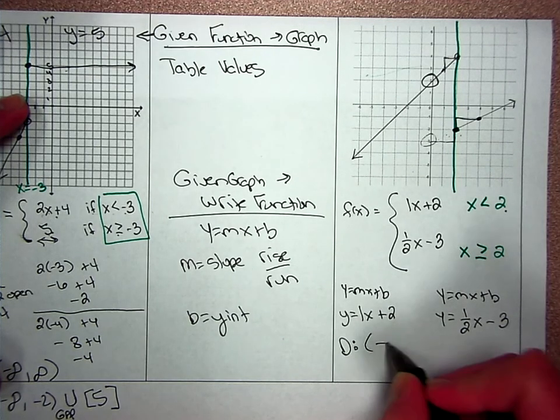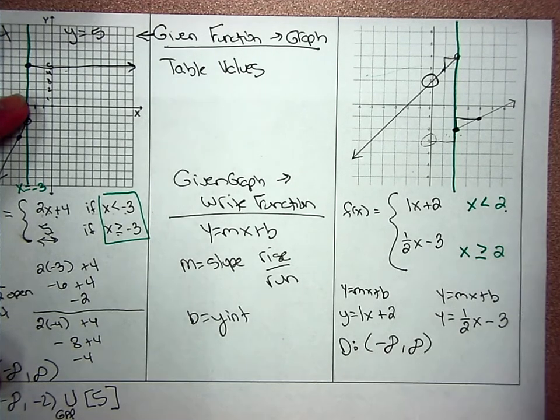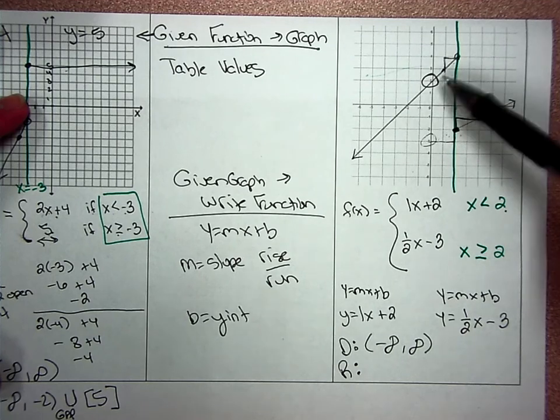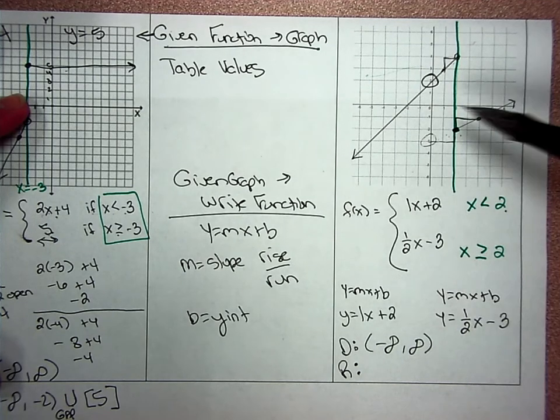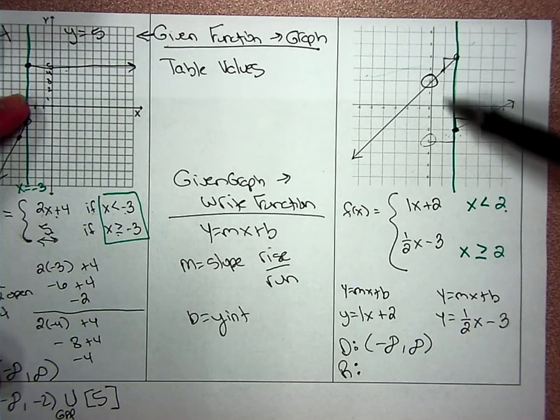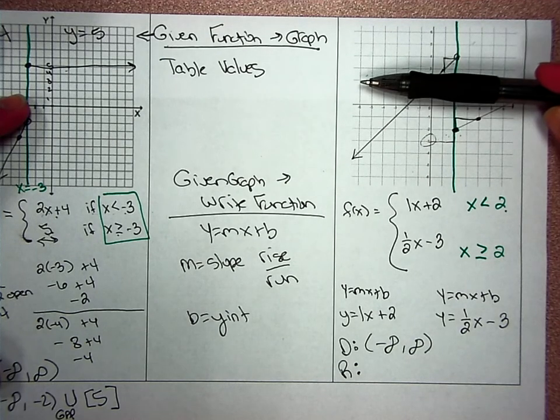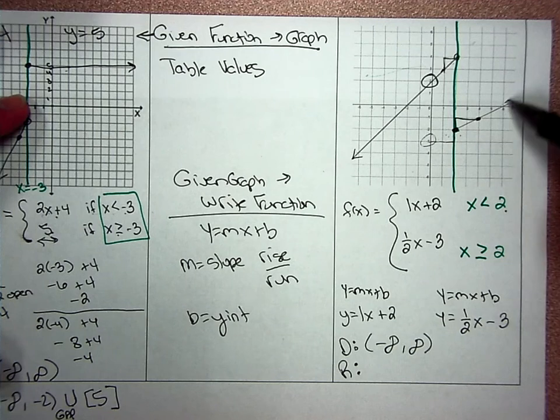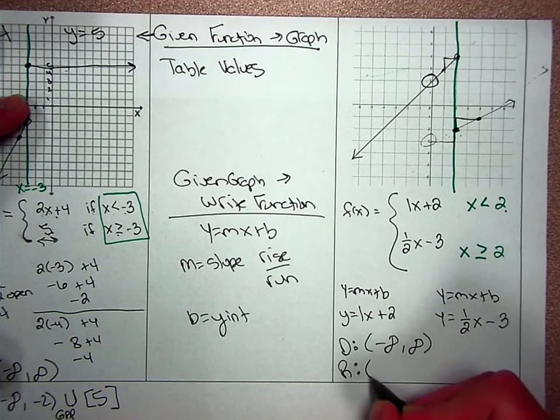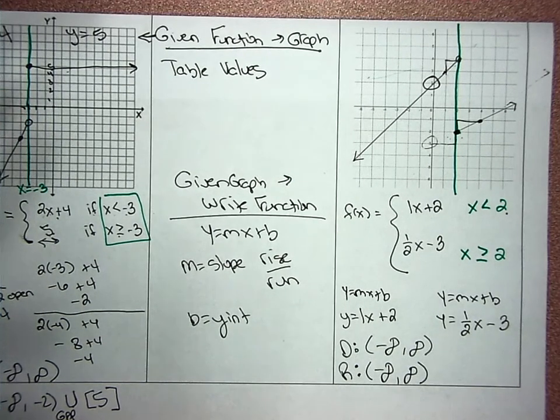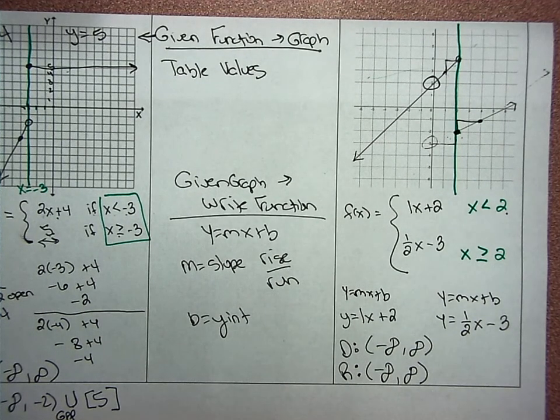Domain is all real numbers or we write it as negative infinity to infinity. You can plug in anything that you want. And then the range is your answers that you get out of it. This one is going down to negative infinity. And we have an overlap here. I don't have a gap because I always have a function that's happening. And then this one would be going up to positive infinity. So this range would also be negative infinity to infinity. Hope this helps for the test.